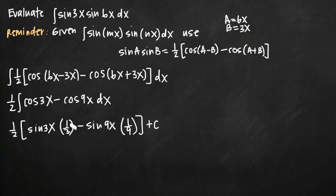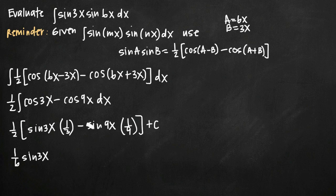So when we simplify here, we'll bring this one third to the front and multiply it by our one half. So we'll get one sixth sine of 3x. We'll bring our one ninth to the front, multiply it by the negative sign here and the one half, and we'll get minus one over 18 sine of 9x, and then plus c.